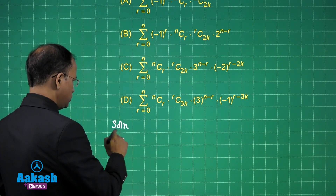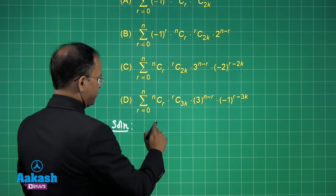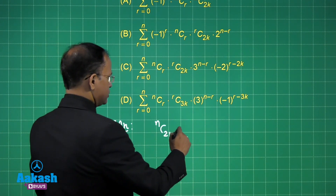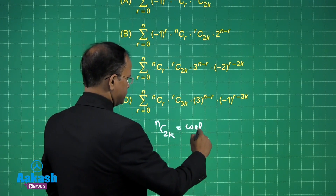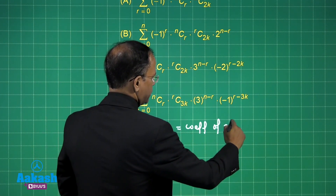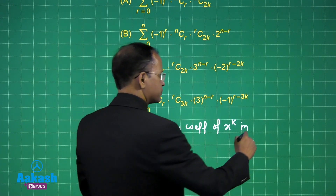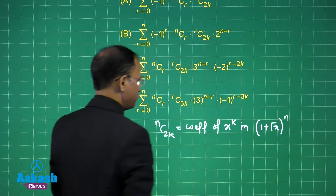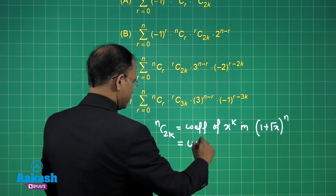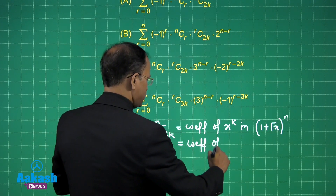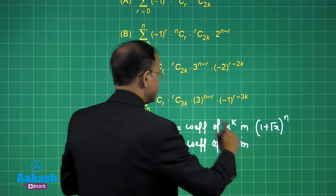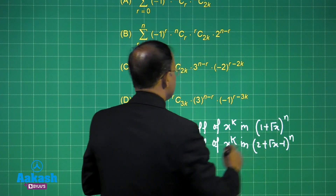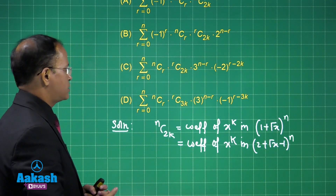For the solution, we consider nC2k. Now, nC2k can be identified as the coefficient of x to the power k in the expansion of (1 + √x) raised to the power n. This is how we can approach it, and this is nothing but the coefficient of x to the power k in (2 + √x − 1) raised to the power n.